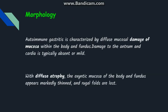Regarding morphology, autoimmune gastritis is characterized by diffuse mucosal damage of the body and fundus of the stomach. The stomach has regions including the fundus, body, cardia, and antrum. In autoimmune gastritis, the body and fundus are mostly involved, while damage to the antrum and cardia is typically absent or very mild.